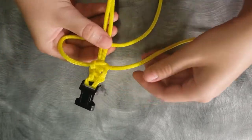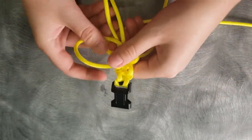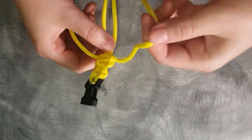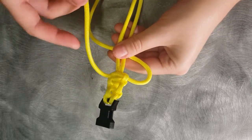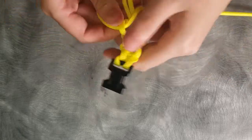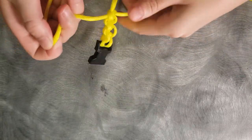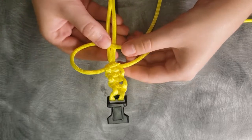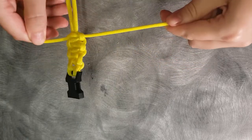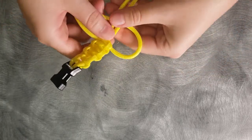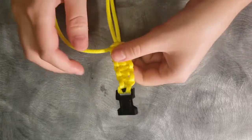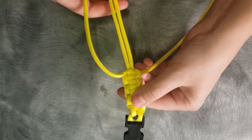Loop over bracelet, over one, under, through the loop. Tighten. Loop over bracelet, over one, under, and through. Tighten. Loop over, over, under, through. And you can do this for the entire length of your bracelet.